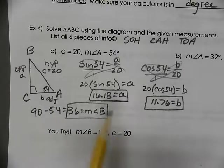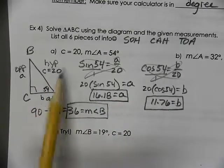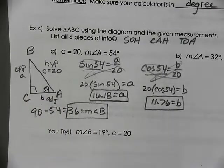So those are the three sides: 16.18, 11.76, and 20. And the three angles: 36, 54, and 90.